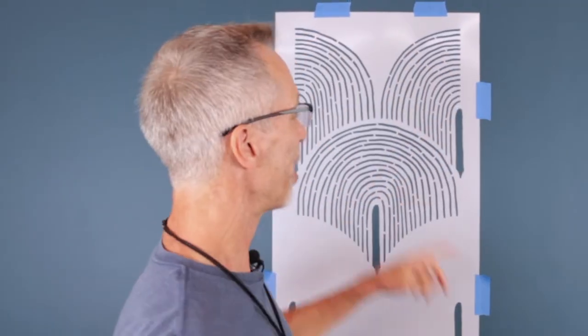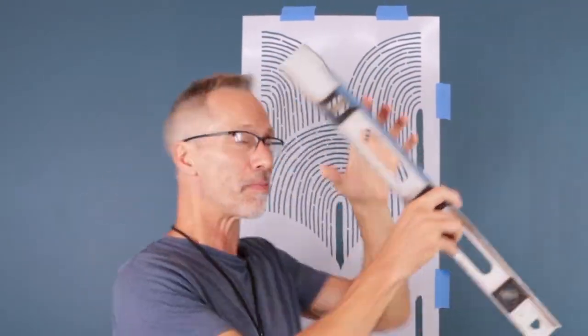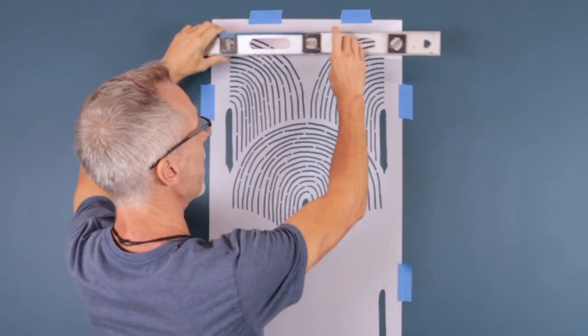The old way to level a stencil, you had to get a bubble level like this. You had to make chalk marks or pencil marks on the wall. You had to try to line this up with the top of your stencil. Just an absolute nightmare.